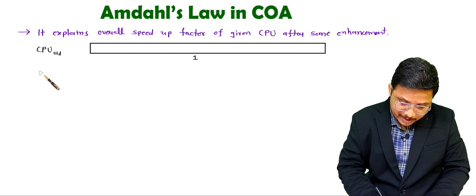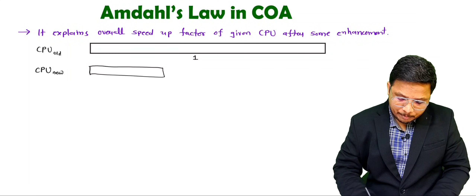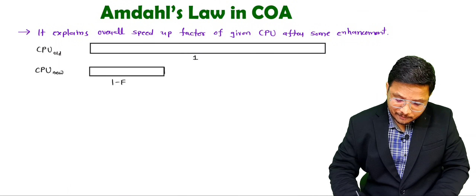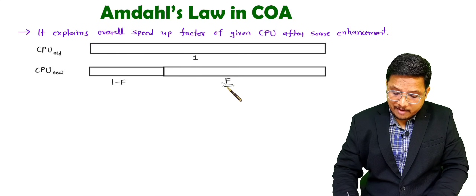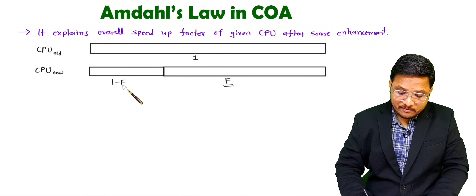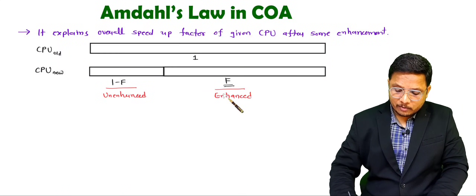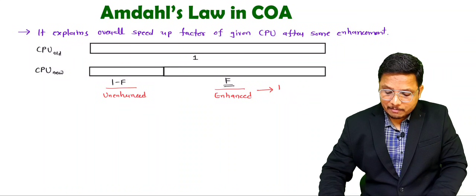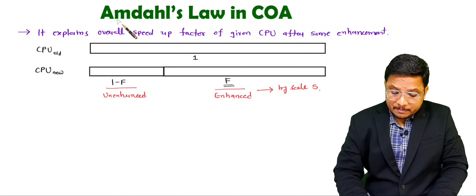What we are doing is providing enhancement to the CPU. In the enhanced CPU, there is a portion which is not enhanced — that is (1 minus F) — and the portion we are enhancing is fraction F. So F fraction is enhanced and (1 minus F) fraction is unenhanced. Once you enhance this, data will tell you by what scale it is enhanced — let us say enhanced by scale S. So if you enhance it by scale S, what will be the overall speed factor? That is what Amdahl's law explains.